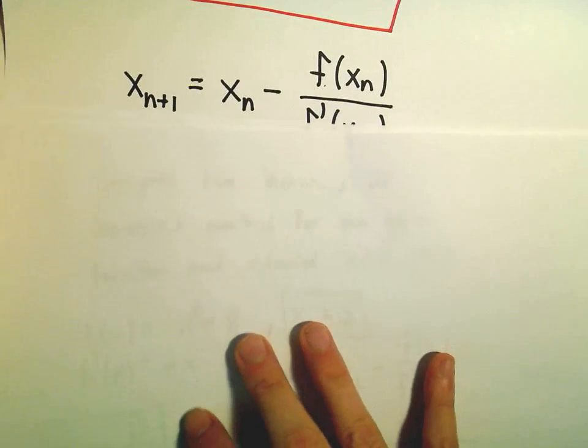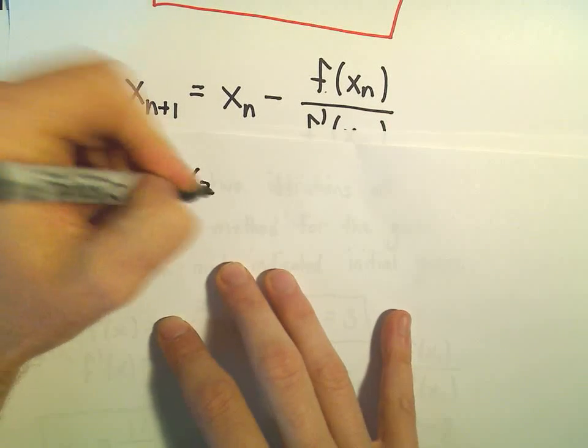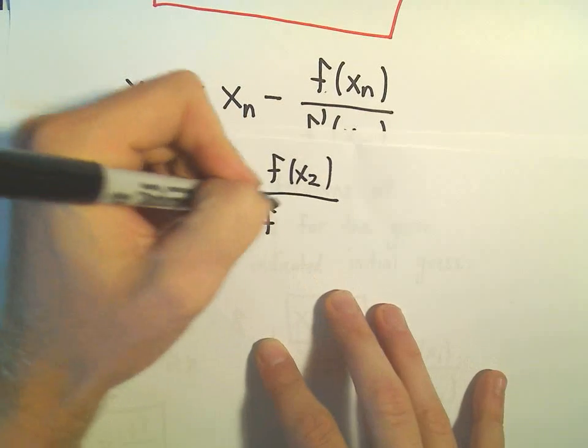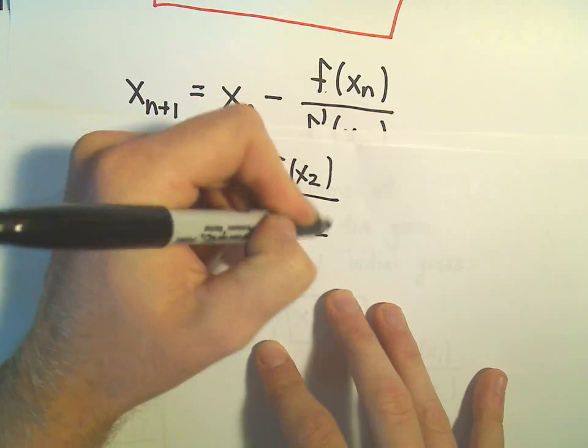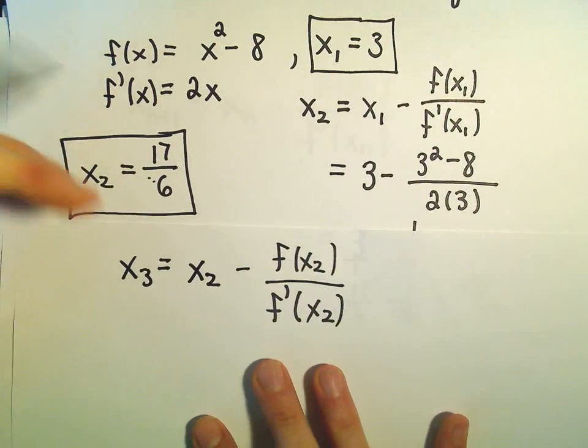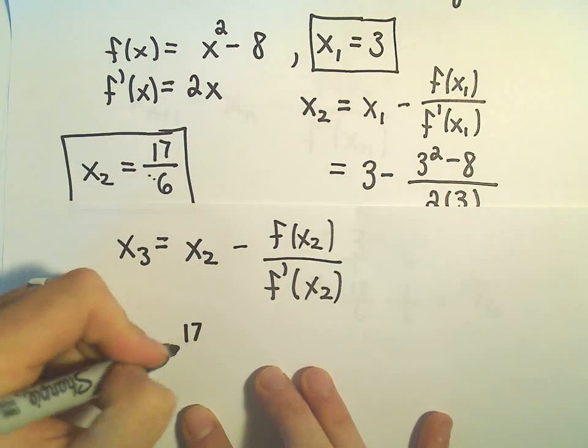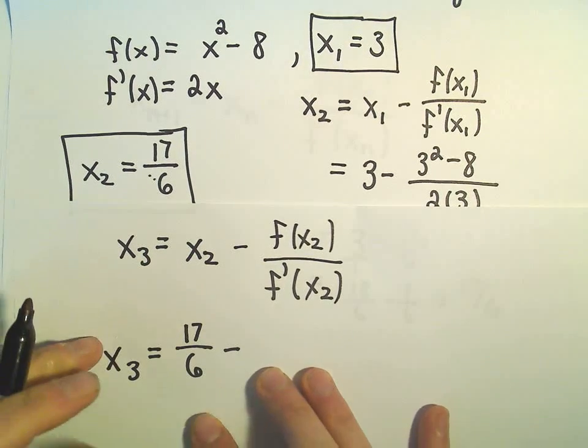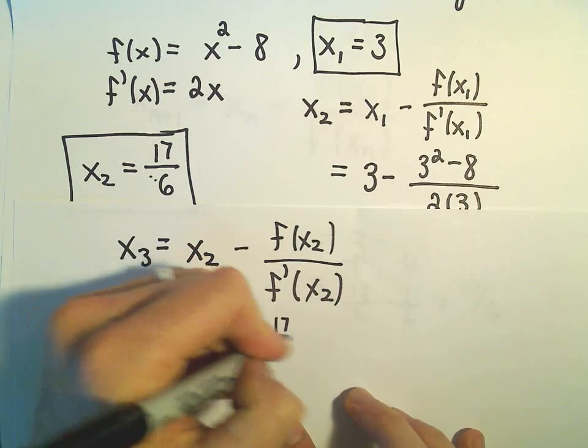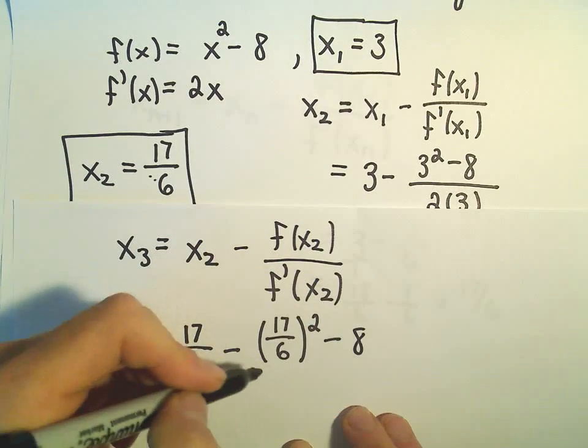Okay, so it says to get our third guess, that would be the second guess minus our second guess plugged into our function, and then divided by our second guess plugged into the derivative. But again, we figured out what our x sub 2 value is. So it says x sub 3 is going to be 17 over 6 minus, okay, we're going to have to plug 17 over 6 into our function,